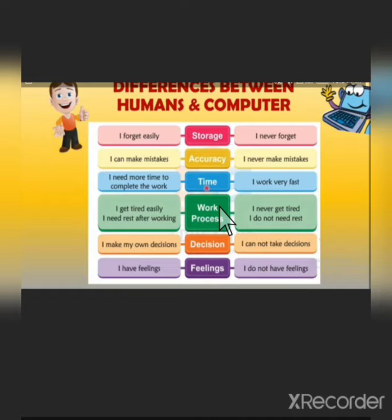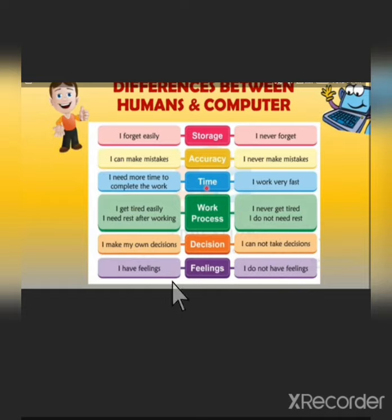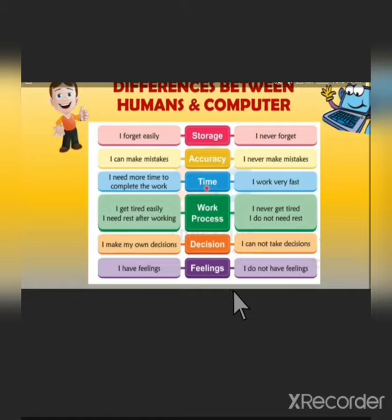In terms of work process, humans get tired easily and need rest after working, but a computer never gets tired and does not need rest. In terms of decision-making, humans make decisions but a computer cannot take decisions. In terms of feelings, humans have feelings but a computer does not — a computer does not feel happy or sad.